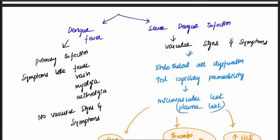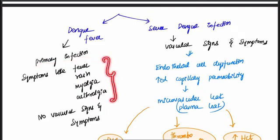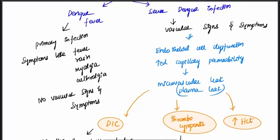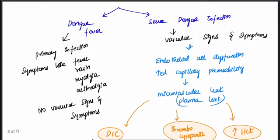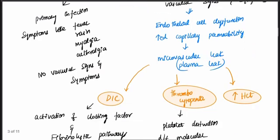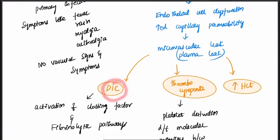Dengue can be of two types: simple Dengue fever or severe Dengue infection. Simple Dengue fever occurs due to primary infection with symptoms like fever, rash, myalgia, and arthralgia, with no vascular signs. In severe Dengue infection, vascular signs are present — occurring during secondary infection — with endothelial cell dysfunction, increased capillary permeability, microvascular leak, plasma leak, DIC, thrombocytopenia, and increased hematocrit.